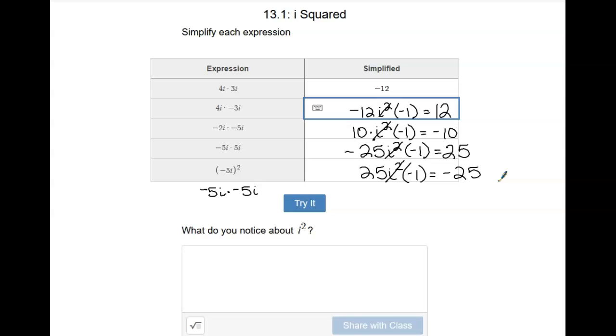So what do you notice about i squared? One of the things that you might notice is that it changes this part to its opposite. So whatever number you get, if you have it followed by an i squared, if you're multiplying by an i squared, it takes this number here and just changes it to its opposite. So i squared has the same effect as multiplying by negative 1.